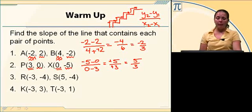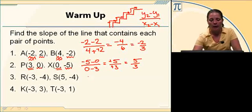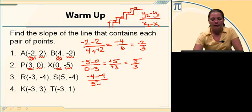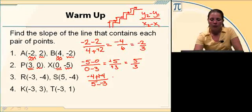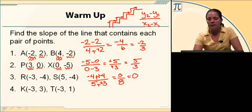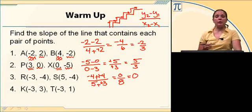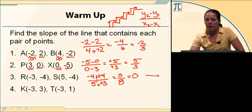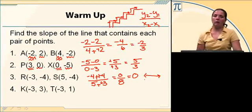Number 3, once again, change in Y's: negative 4 minus negative 4, over the change in X's, which is 5 minus negative 3. This gives me 0 over 8. Well, 0 over anything is 0, so the slope is 0. Lines that have a slope of 0 are horizontal lines, so this tells me it's a horizontal line.